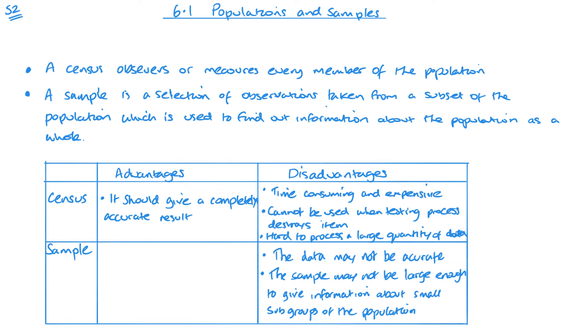Now looking at the advantages of the sample, they're going to be the opposite. Less time consuming and expensive than a census. Fewer people need to respond. Much less data than in a census. Can be used if the testing process destroys an item. It's important to say less data to process than in a census, rather than just less data to process, because you still might have a large amount of data, it's just going to be less than if you took an actual census.